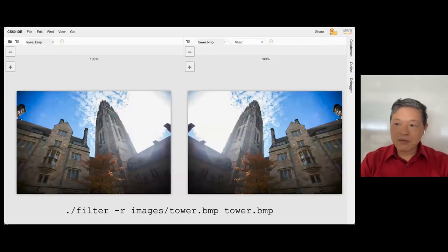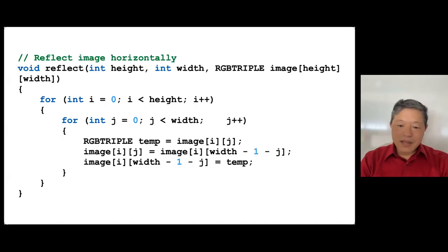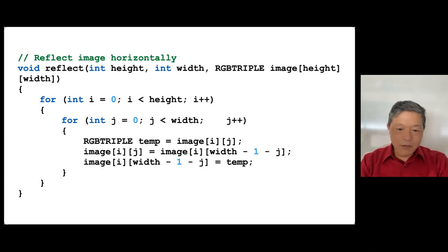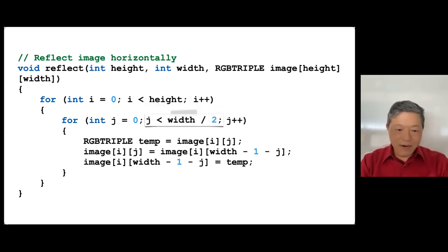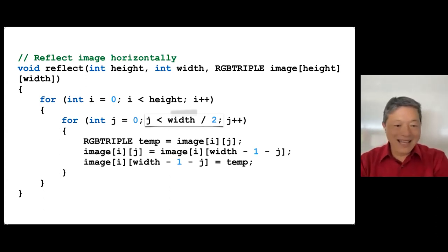We introduce the problem set called Filter — one of the CS50AP problem sets involving working on an image, where this is the algorithm used to reflect or reverse that image. A common error kids make is going through each row in the J loop all the way to the end. The unplugged activity helps kids realize you only need to go halfway, because if you go more than halfway it ends up the same — filter was working, it reflected it entirely, and then continued and reflected it back again.